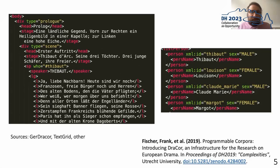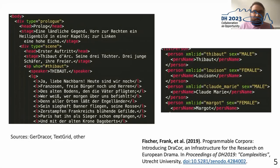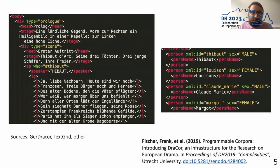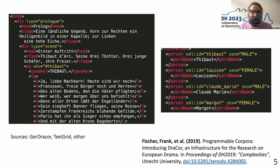The plays themselves were mostly taken in XML form from the platform GerDraCor but also TextGrid. They were further prepared for specific annotations and already included some structural information. We also added additional information depending on the task — for example, gender information for older and unique plays of our corpus so they were usable for our specific project.